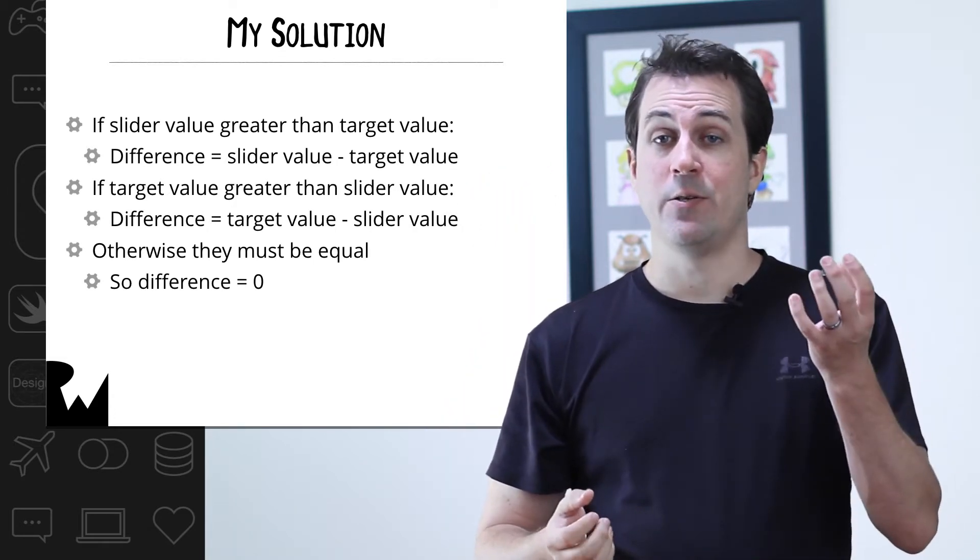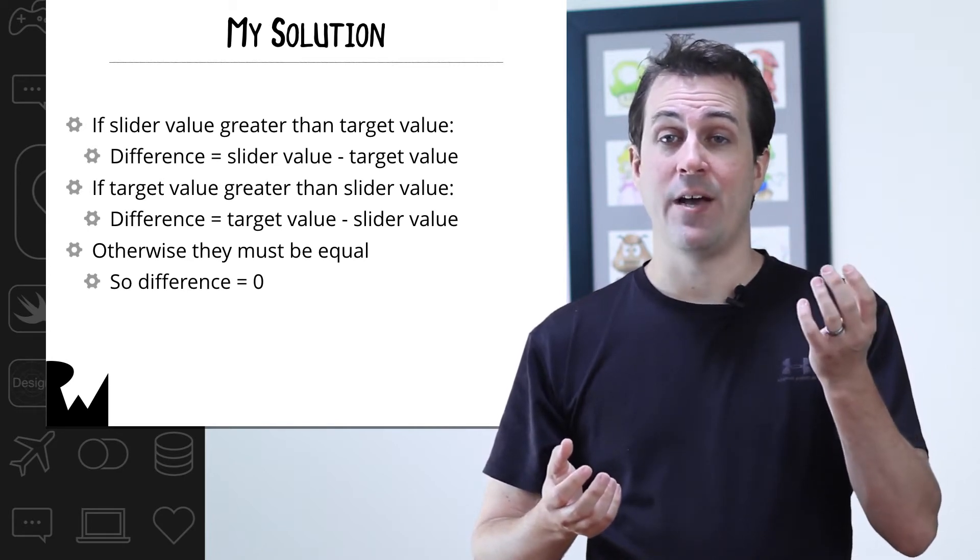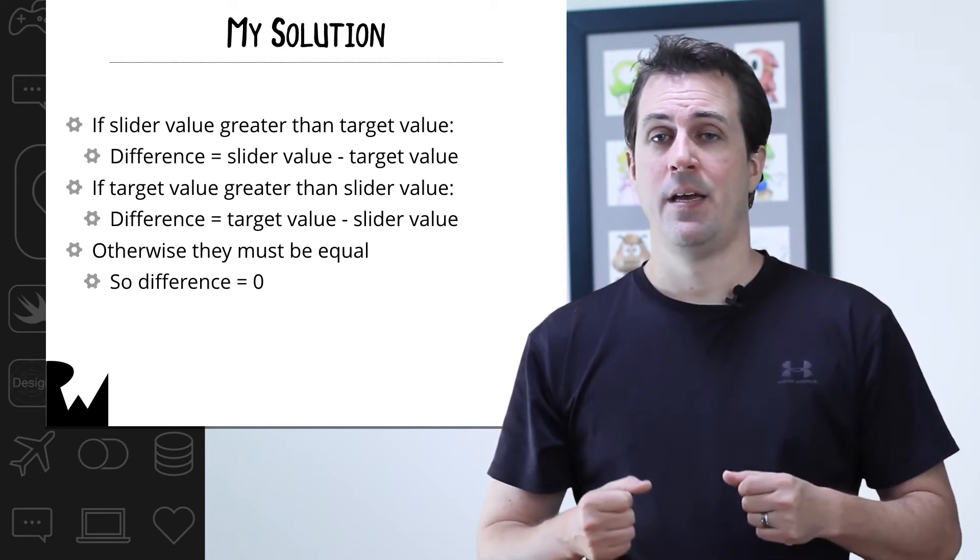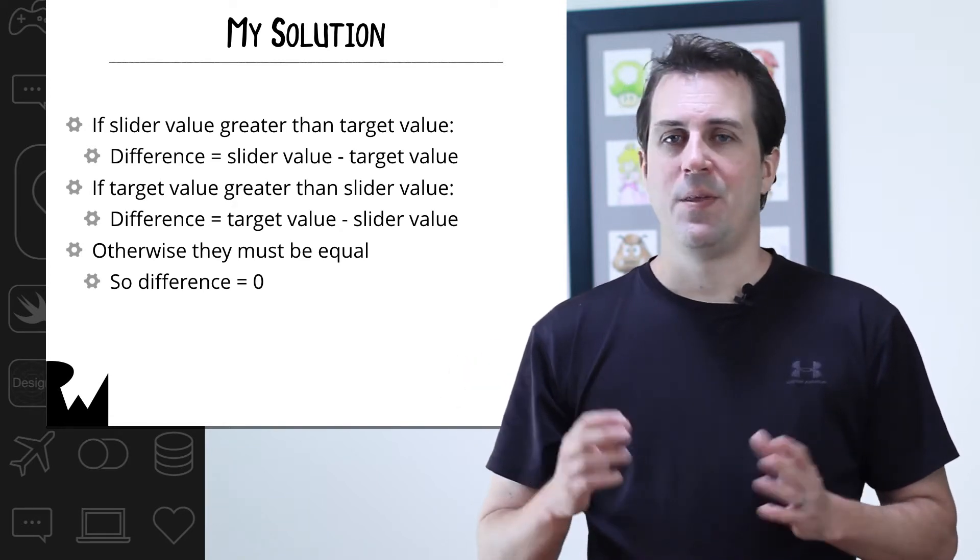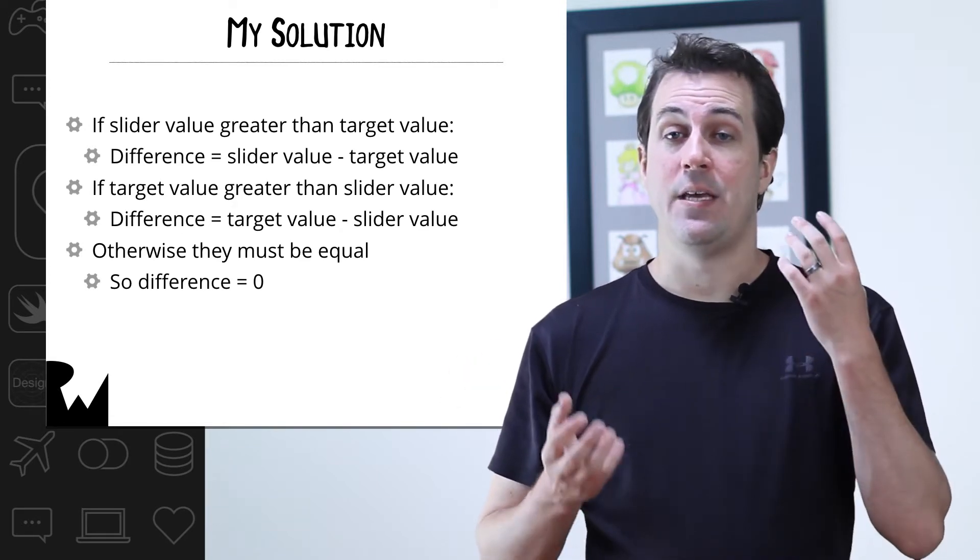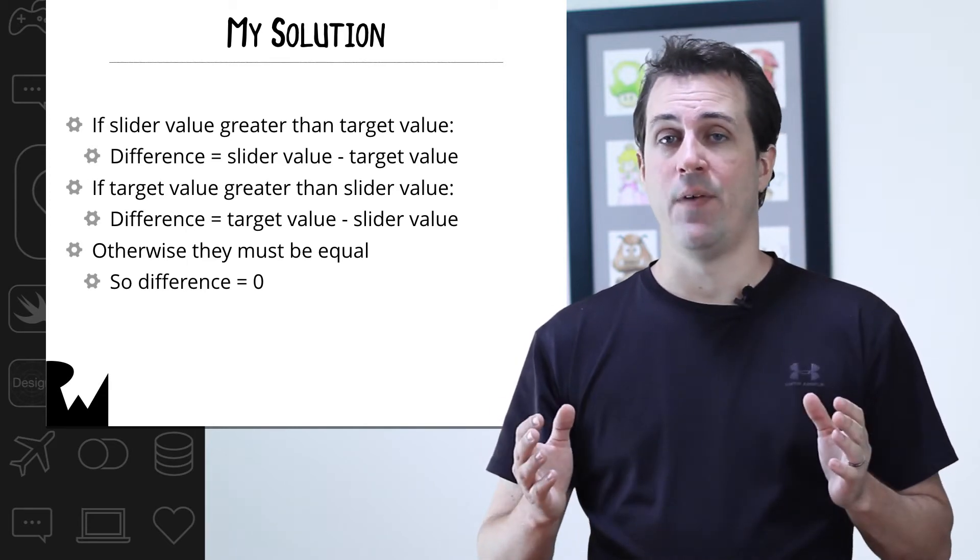On the other side, if the target value is greater than the slider's value, then the difference is the target value minus the slider's value. And if none of that is true, then they must be equal so the difference is zero. This way you're always subtracting the smaller number from the larger number so you always get a positive value.